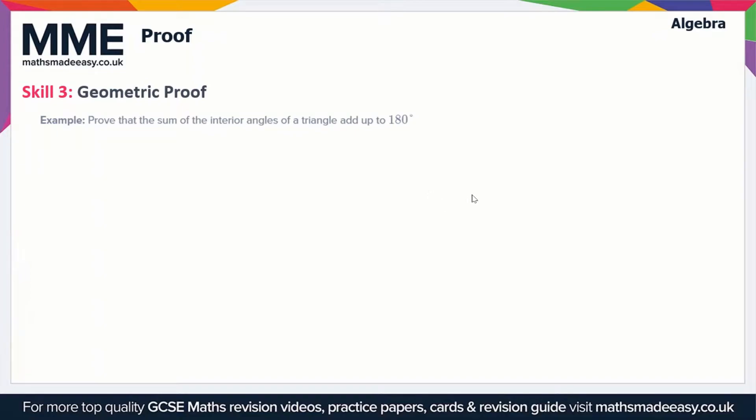In this example, we have to prove that the sum of the interior angles of a triangle add up to 180 degrees. This is quite a specific example. It's probably easiest if you just memorize this proof if you want to try and learn it.